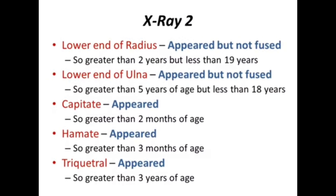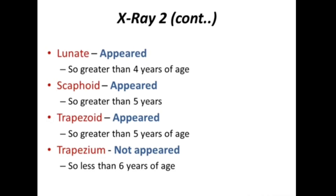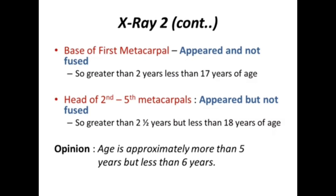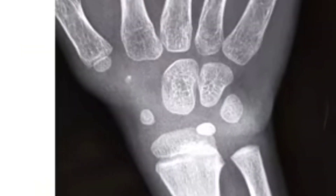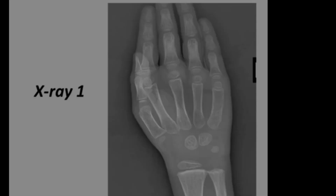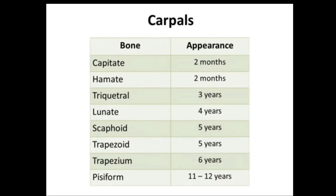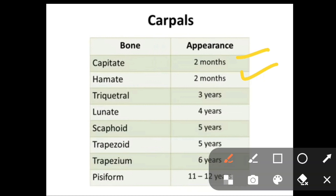Lower end of the radius appeared but not fused: greater than two years, less than 19 years. Lower end of the ulna appeared but not fused: greater than five years, less than 18 years. Capitate, hamate, triquetral, lunate, scaphoid, trapezoid all appeared. Trapezium not appeared, so less than six years. Base of the first metacarpal appeared but not fused. Opinion: the age is more than five years, less than six years. A simple trick: count the number of carpal bones — if three are seen, age is between three and four years; if six, between five and six years.